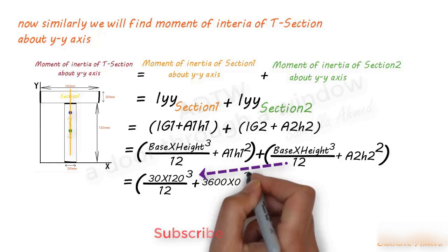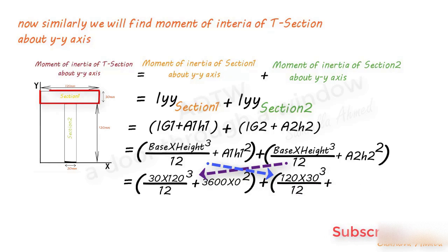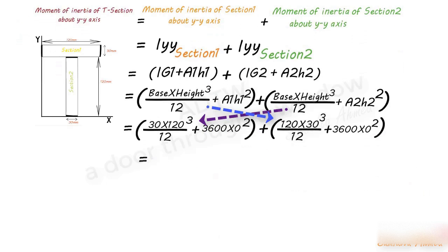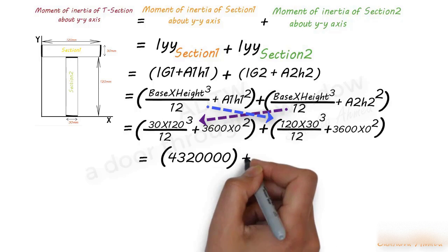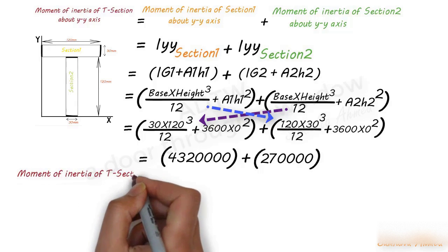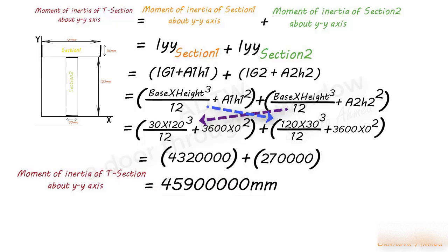For Section 1: base is 120 mm, height is 30 mm, so IG1 = (120 × 30³) / 12, plus 3600 × 0² since the CG of Section 1 and T-section also lie on the same vertical line. After computing: 43,200,000 + 270,000 = 43,470,000 mm⁴. Therefore the moment of inertia of the T-section about the Y-axis is 43,470,000 mm⁴.